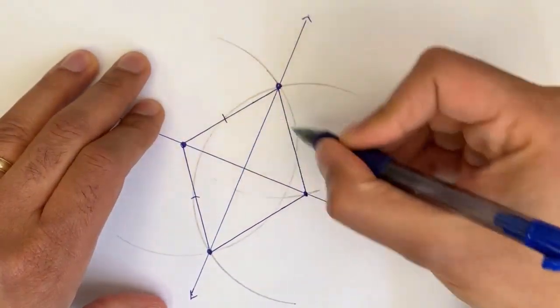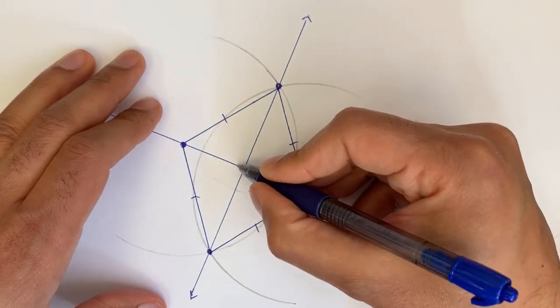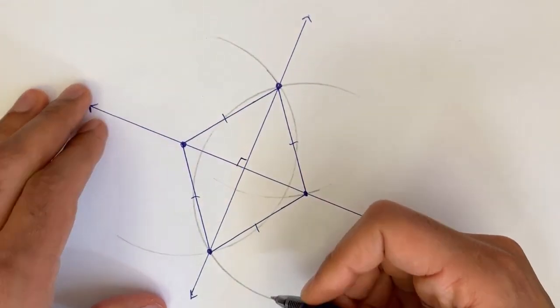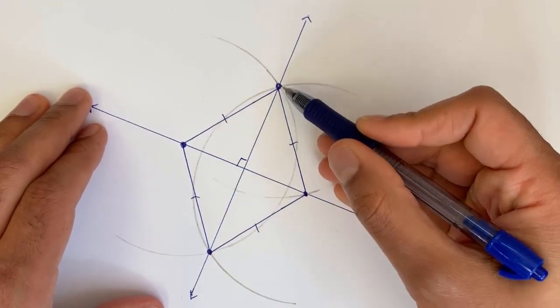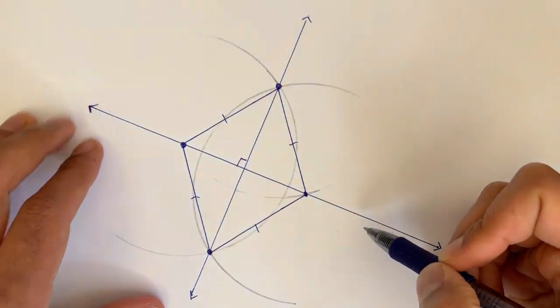And then, so this is a rhombus. And we know that the diagonals of a rhombus intersect at right angles. So there you have it. I have drawn a new line that goes through that off line point and is perpendicular to our original line.